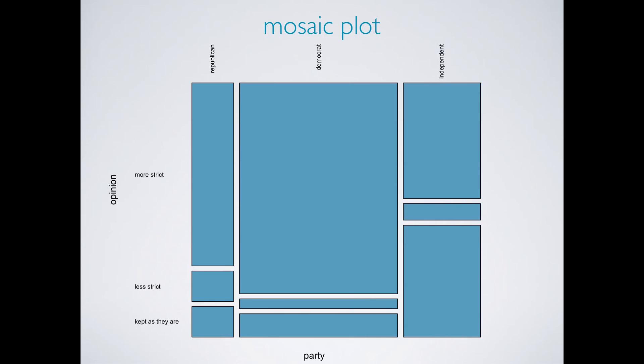A mosaic plot like this one displays the distribution of opinion on gun laws conditional on party affiliation. It also shows the marginal distribution of party affiliation as well. The width of the bars tells us about the marginal distribution of party affiliation. We can see that more Democrats were surveyed than any other group, just as we saw in the original data.